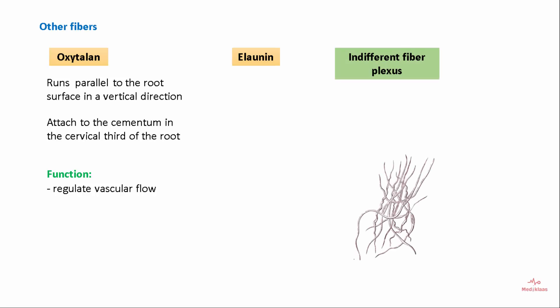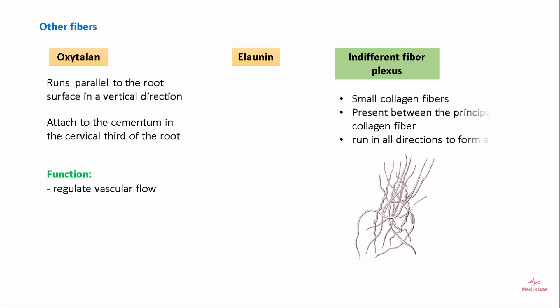There is also an indifferent fiber plexus, which consists of small collagen fibers present between the principal collagen fibers of the periodontal ligament. These run in all directions to form a plexus.